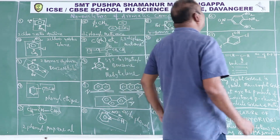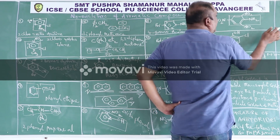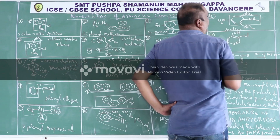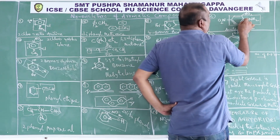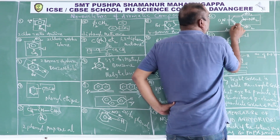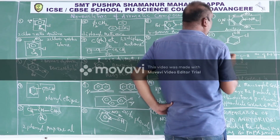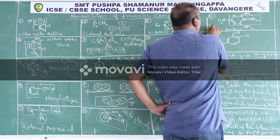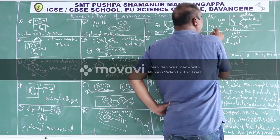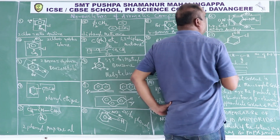Here the base compound is aniline. The base compound substituent is numbered 1, then 2, 3, 4, 5, 6. Therefore the IUPAC name is 2,4,6-trinitroaniline.